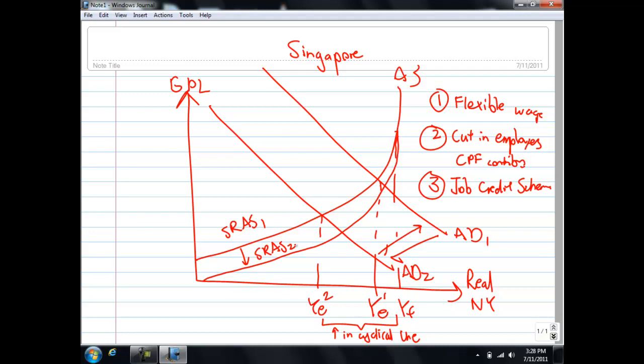Look what has happened. By the shift down of the SRAS curve, there's a movement along the AD2, so that now we are moving from YE2 to YE3. The flexible wage scheme has reduced our cost of production, and the gap between YF and YE has now become smaller. We are offsetting some of the increased cyclical unemployment that is brought about by the fall in our net exports.